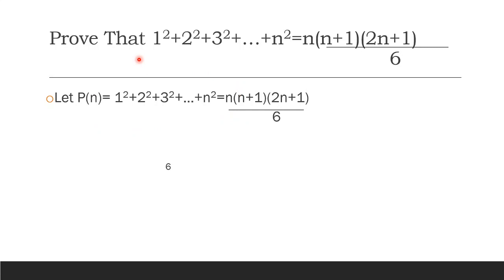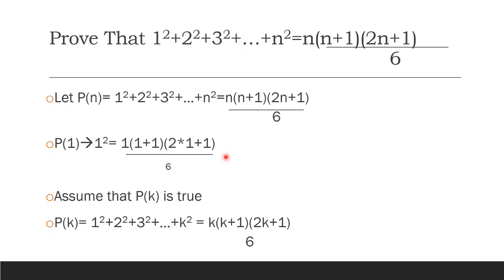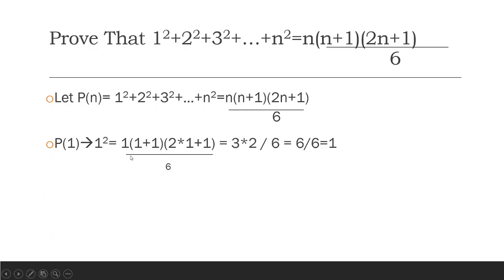This is P of N. Now we prove the basis step. To show P of 1 is true, substitute N equals 1. The left-hand side is 1 squared equals 1. The right-hand side is 1 times 1 plus 1 times 2 times 1 plus 1, divided by 6, which also equals 1. So LHS equals RHS, which means P of 1 is true.